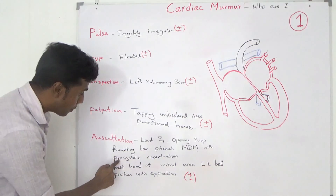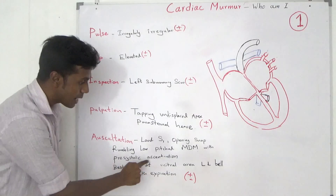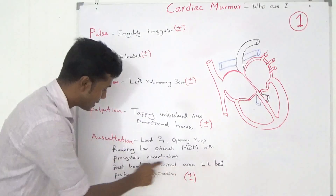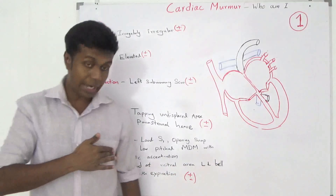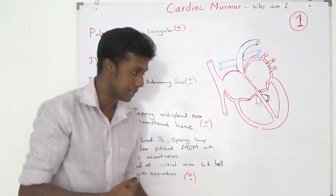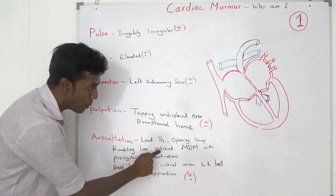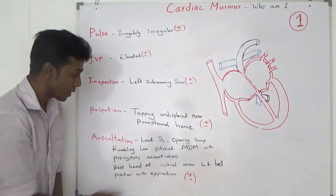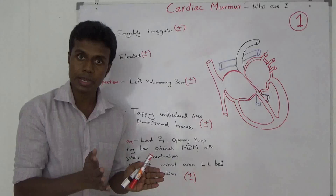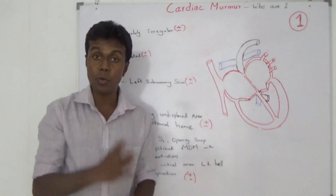There is a rumbling, low-pitch, mid-diastolic murmur with pre-systolic accentuation. It is best heard at the mitral area, in the left lateral position, with the bell of the stethoscope, during expiration — more pronounced in expiration.